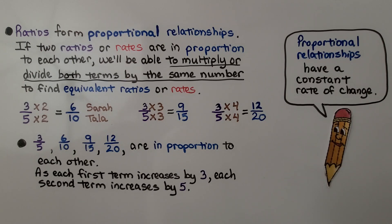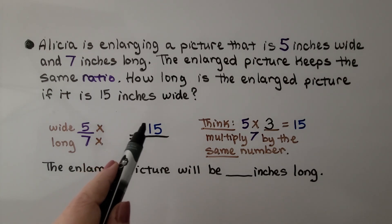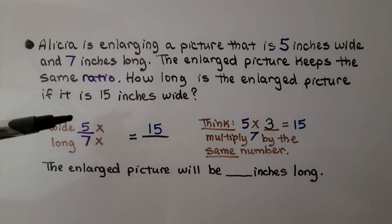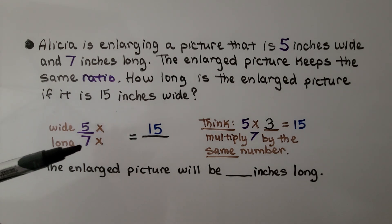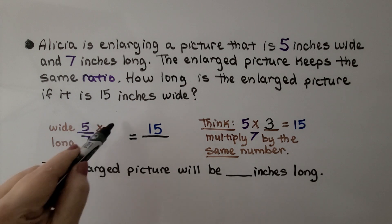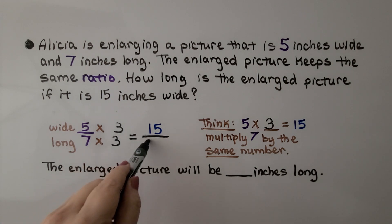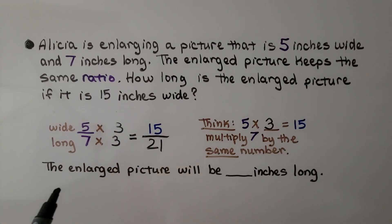Proportional relationships have a constant rate of change. Alicia is enlarging a picture that is five inches wide and seven inches long. The enlarged picture keeps the same ratio. How long is the enlarged picture if it's fifteen inches wide? Our first term is the width, five, and our second term is the length, seven. Five times three equals fifteen, so we multiply the seven by the same number and get twenty-one. The enlarged picture will be twenty-one inches long.